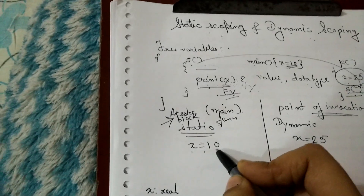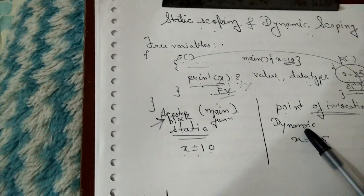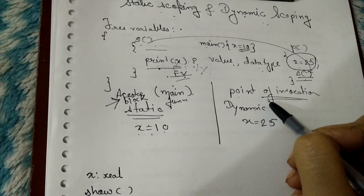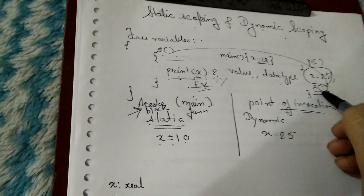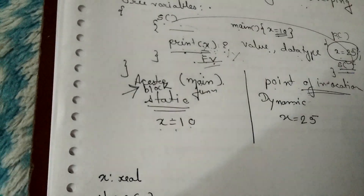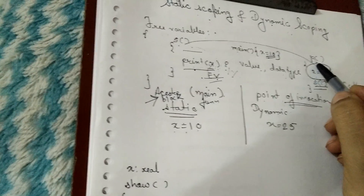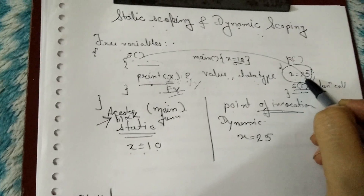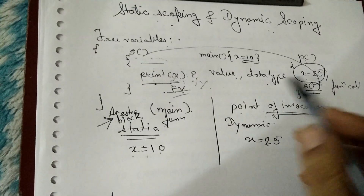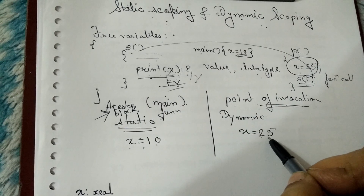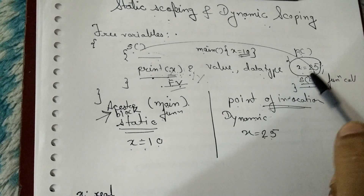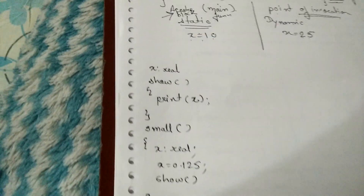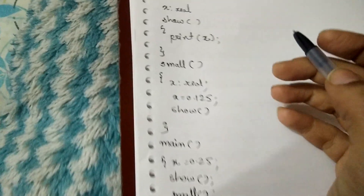In dynamic scoping, we look at where the function is called from. The function is called from function P, and in function P the value of X is 25. So in dynamic scoping the free variable X becomes 25, because we use the concept of point of invocation. Now let us take one pseudo code to understand this better.